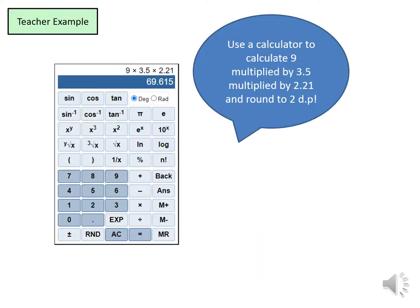We'll go to the first example. It says use the calculator to calculate 9 multiplied by 3.5 multiplied by 2.21. So in the calculator, I'll press 9 multiplied by 3.5 multiplied by 2.21 and then press equals. Right at the end, you must press equals. And you have an answer here of 69.615. And you need to round that to two decimal places.